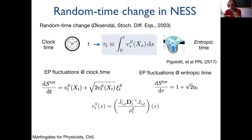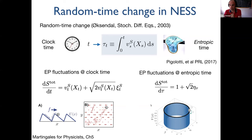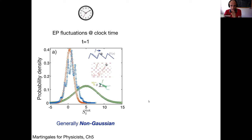Doing this time change, the equation for entropy production becomes a simple drift-diffusion process with drift one and diffusivity one in entropic time. This means that processes with very complex dynamics — like non-equilibrium stationary processes — if you measure time in these units, the fluctuations of entropy all become equivalent to those of a particle in a ring with drift one and diffusivity one.